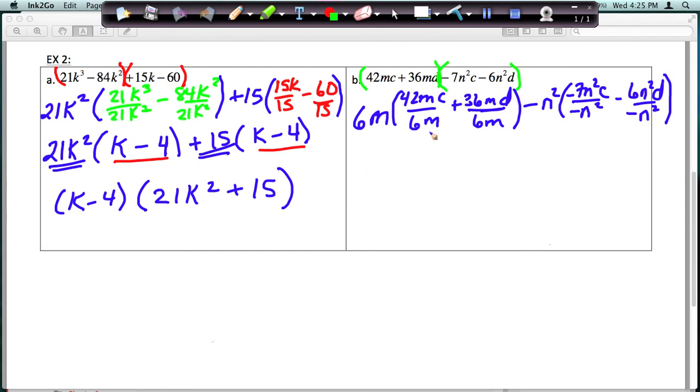So now let's just simplify this and see what we have. Over here we have 6m times 7c plus 6d. Over here the negative divided by negative is positive, and I get 7c. Again, a negative divided by negative is positive, and I get 6d. Because in both cases here the n squared cancels.